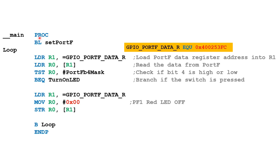PROC here indicates the start of the procedure. BL set_portf branches to the subroutine called set_portf. Then LDR R1, =GPIO_PORTF_DATA_R loads the address of the Port F data register — defined earlier — into R1.